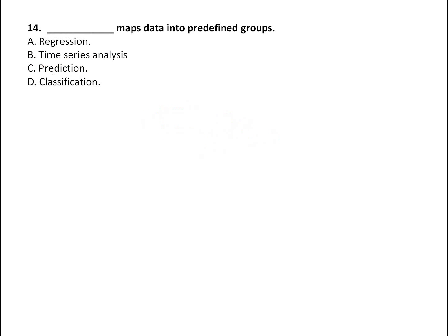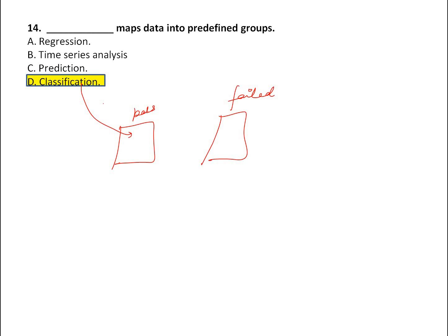What maps data into predefined groups? The answer is classification. For example, students who passed and students who failed are predefined groups — classification maps data into those groups. In data mining there are two types of models: descriptive models and predictive models. Descriptive models find human-interpretable patterns. Predictive models find the value of an attribute using the value of other attributes, using historical data.